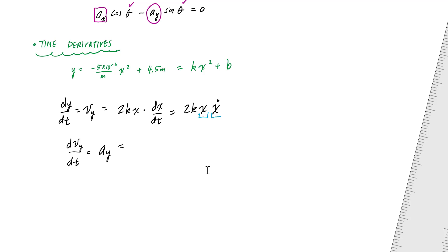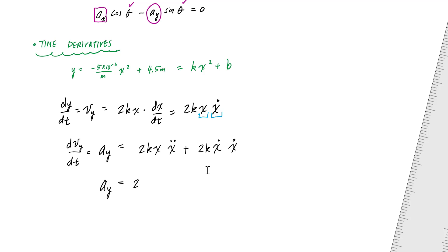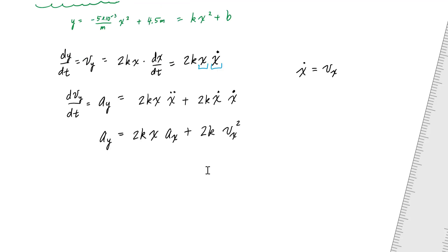Taking another time derivative to get ay, I apply the product rule to 2kx times x-dot. Holding x constant first gives 2k times x times x-double-dot, and holding x-dot constant gives 2k times x-dot times x-dot. So ay equals 2k times x times ax plus 2k times vx squared. This gives me equation two — a relationship between ay and ax.